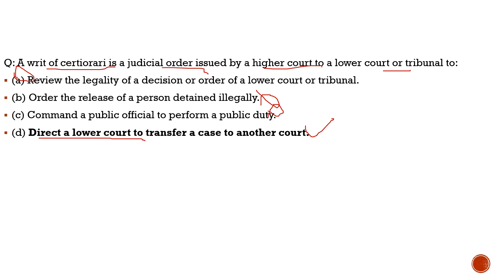Coming back to Option A — reviewing the legality of a decision or order of a lower court or tribunal — this is correct. The main purpose of certiorari is to review legality; when higher courts review, they transfer the case. Importantly, certiorari is issued after the judgment has been given. Between options A and D, option A is more elaborate and defines certiorari in a more complete manner. With this, let's move to the previous year questions.